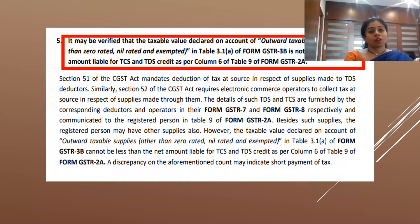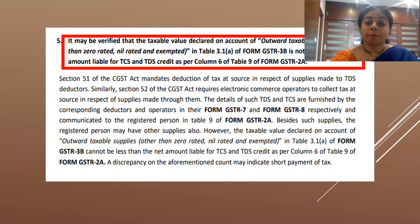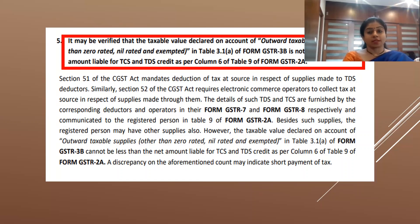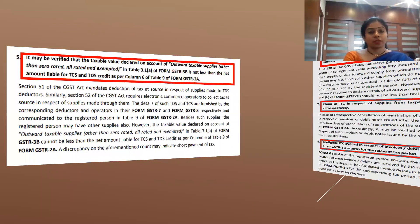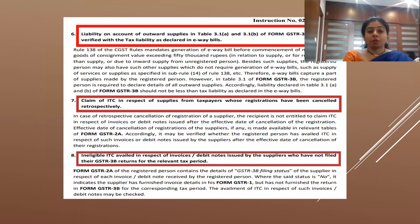Point number five: in case of TDS deducted or TCS collected, the department will match the details furnished by the deductor with the outward supply as declared in GSTR-3B. If any short payment of tax is noticed, the case will be chosen for scrutiny. In short, wherever there is a short payment of taxes noticed by the department using any of these criteria, it will be an attractive case for scrutiny.